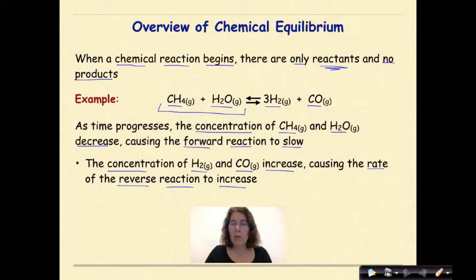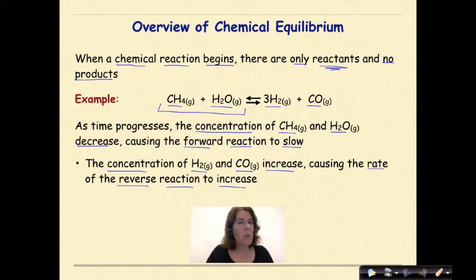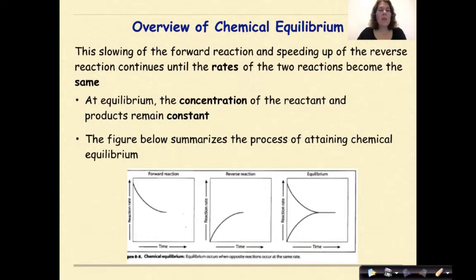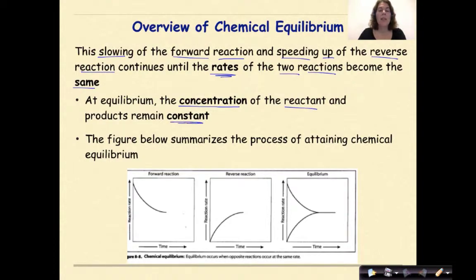The concentration of hydrogen gas and carbon monoxide over time will increase, causing the rate of the reverse reaction to increase. We are considering that this is a closed system. When we use some of our reactants to make products, our reactants are going to decrease and our products are going to increase. If this is a closed system where nothing can escape, if we have a bunch of products at the end, the amount of products will decrease as we go backwards and make more reactants.